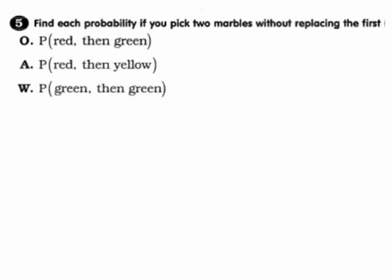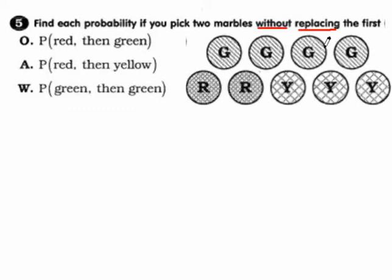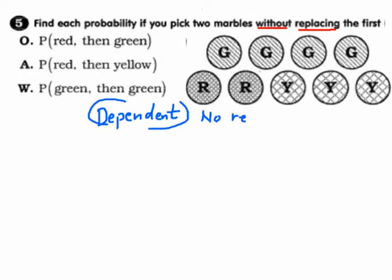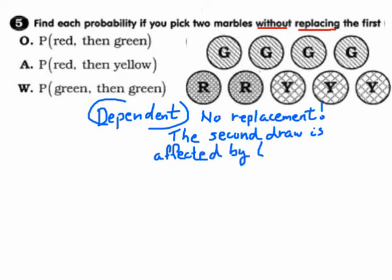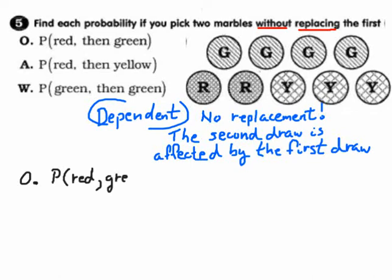Now let's try dependent situations. If you don't replace your marbles — you draw a marble from nine marbles and keep it in your pocket — that's a dependent event. What you do on the first draw affects the second draw. If you take one marble out of nine, there are only eight marbles left for the second draw.